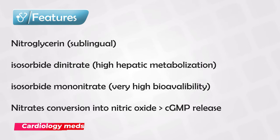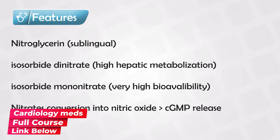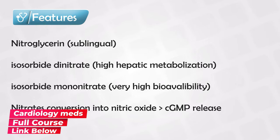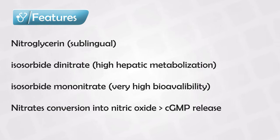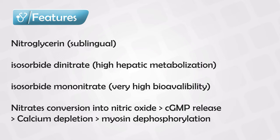Once the nitrate products enter the system, they go into the smooth muscles of the vascular system, and inside the cells they are converted into nitric oxide. Nitric oxide releases cyclic GMP, which decreases intracellular calcium and causes myosin dephosphorylation, and this translates into smooth muscle relaxation.